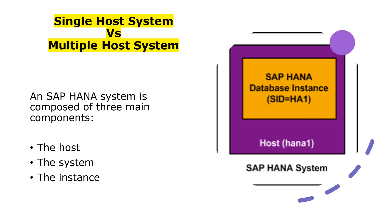Before knowing the difference, you have to know three basic components of a SAP HANA system: the system, host, and instance. These are the main components in any SAP HANA system. A system can consist of one or more instances, but the instance number should be the same. It is also called the SAP HANA database. The SAP HANA system term is integrated with a distributed installation when you have the same SIDs.